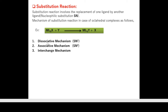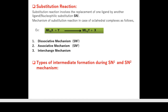In SN1 (dissociative mechanism), the first step of the substitution reaction is dissociation — that is, removal of the X ligand. In associative mechanism (SN2), the first step is association or addition of the Y ligand. Now let's see the types of intermediate formation during SN1 and SN2 mechanisms.